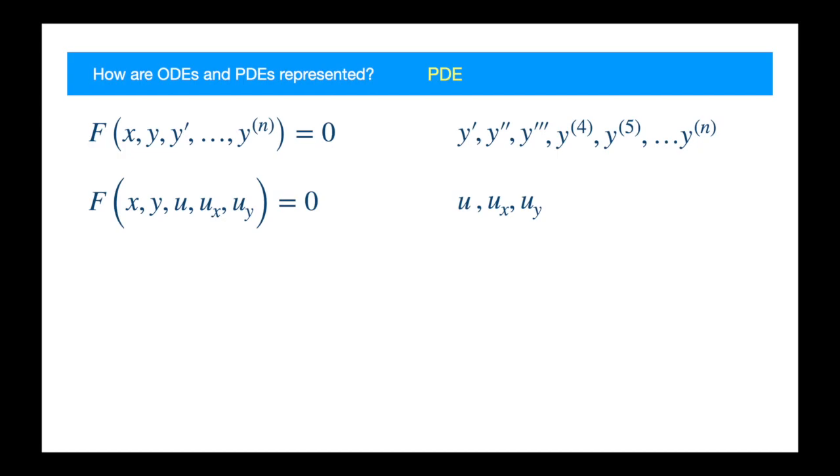Notice y here is the independent variable. And the two partial derivatives are also commonly represented by p and q. Just like in the ODE case we have p, so here we have p and q because we have two derivatives. Let's see an example.